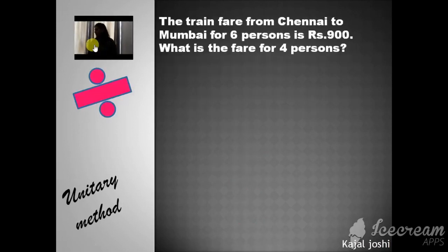Now look at here. The train fare from Chennai to Mumbai for 6 persons is Rs. 900. What is the fare for 4 persons? So here you are given that Chennai to Mumbai for 6 persons the charge is 900 rupees. And you have to find out the charge for 4 persons. Here on one side you write person and second side you write fare. So for 6 persons the charge is 900 rupees and you have to find out the charge for 4 persons.